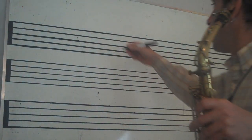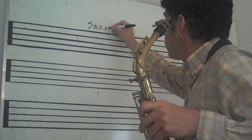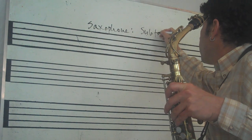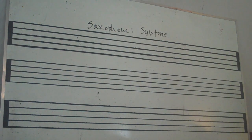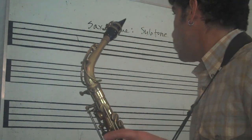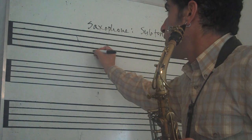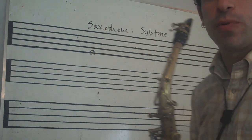Today I want to talk about another effect on saxophone, and this is called the subtone. The way that we play subtone — you could just start off with low E on saxophone, either tenor, alto, or whatever you're playing.